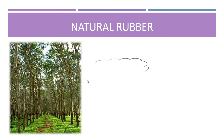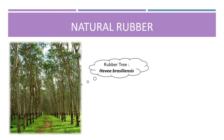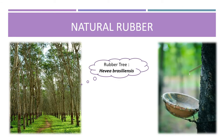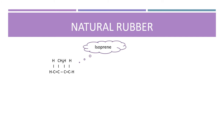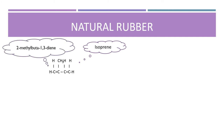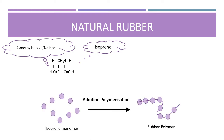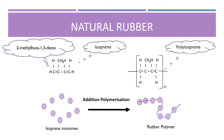Natural rubber is derived from the rubber tree known as Hevea brasiliensis. Natural rubber appears as a milky liquid also called latex. Natural rubbers are made up of small monomer units called isoprene, with the IUPAC name 2-methylbuta-1,3-diene. These small monomers combine into thousands of isoprene units to form polyisoprene, or rubber polymer, through addition polymerization.